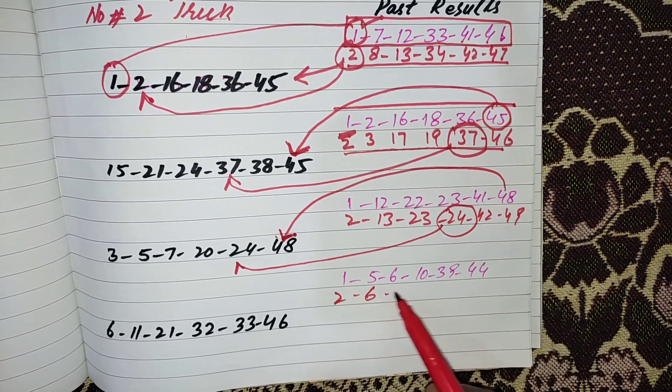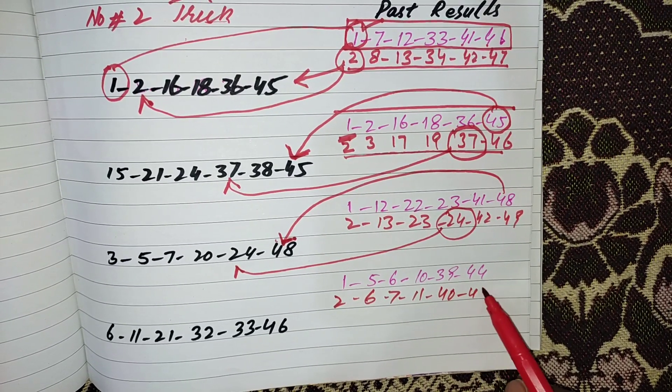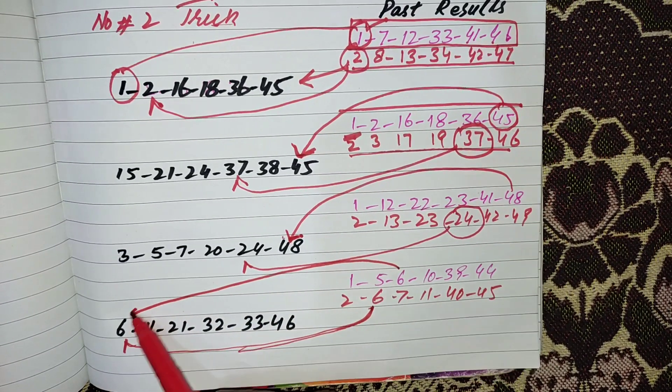2, 6, 7, 11, 40, 45. 6 number came from here and also 6 number repeat.